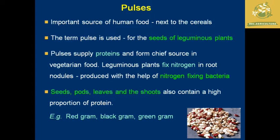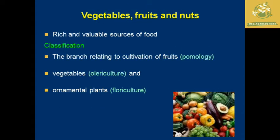The second classification is pulses, which are an important food next to cereals. Pulses are seeds of leguminous plants and mainly provide protein. They also help through nitrogen-fixing bacteria in the soil, making them an important chief source in vegetarian food. They have a high proportion of protein in seeds, leaves, pods, and shoots. Examples include red gram, black gram, and green gram.